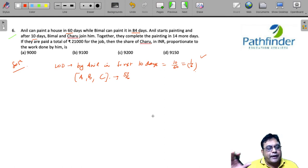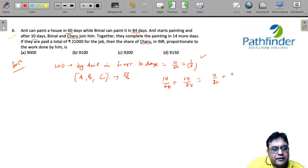Now, we need to find out how much work has been done by Anil and Bimal in the next 14 days. So, work done by Anil and Bimal in 14 days will be 14 by 60 plus 14 by 84.